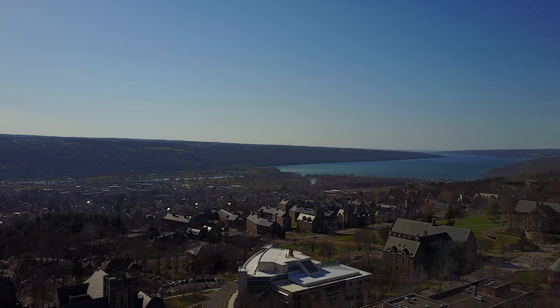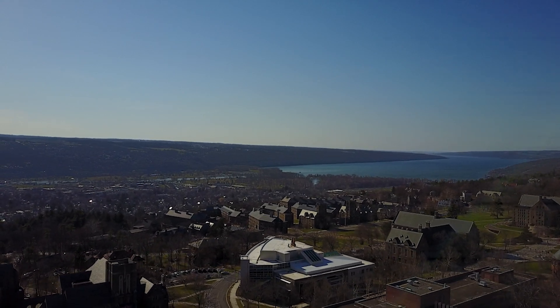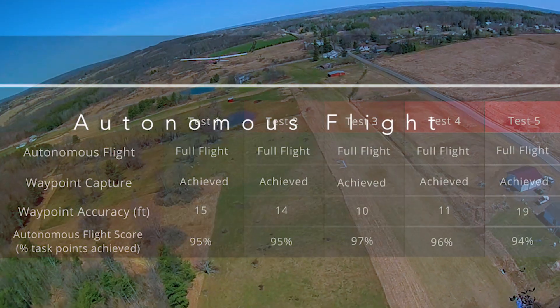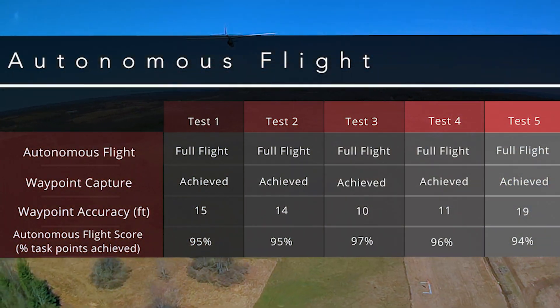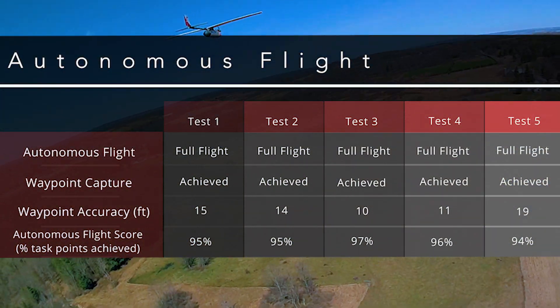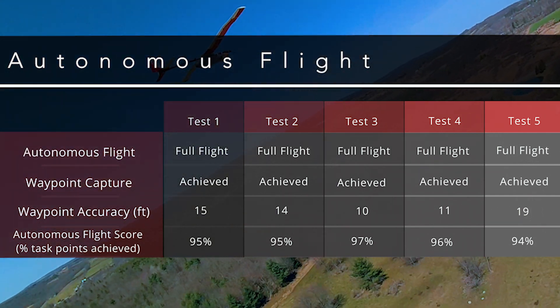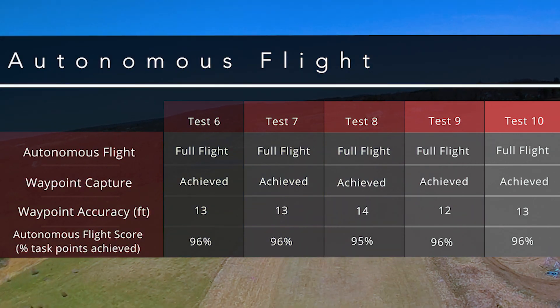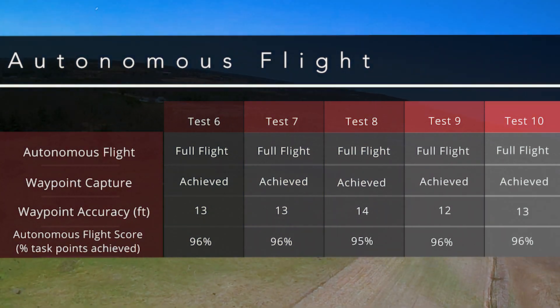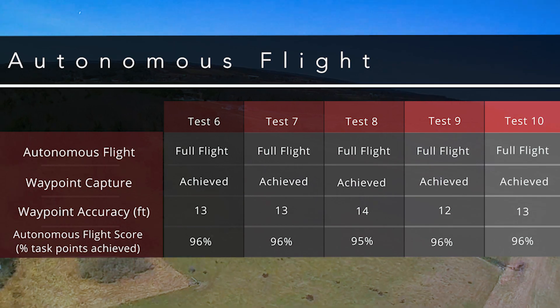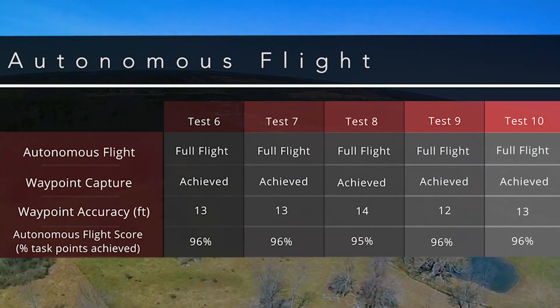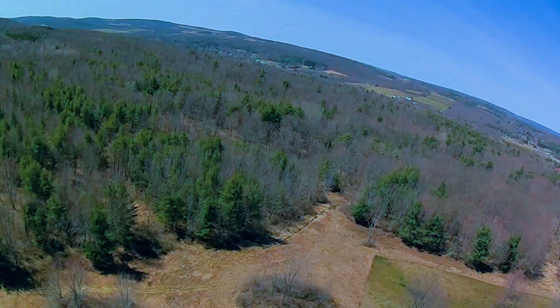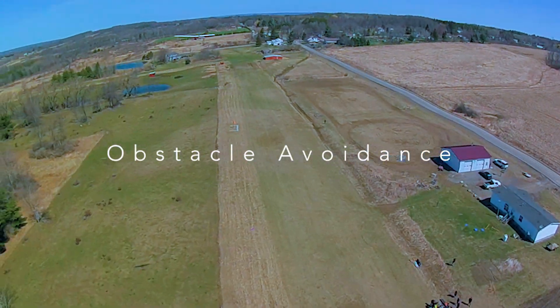For the autonomous flight task, CU Air attempted to fly last year's competition waypoints transposed over our local airfields. On this task, the team scored an average of 95% of total points, with all flights completed fully autonomously. Thea 2 achieved all waypoints within 150 feet and hit waypoints with an average accuracy of 13 feet. The team expects to achieve similar performance in competition.